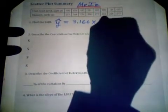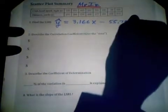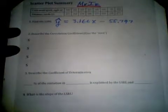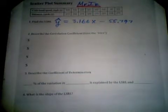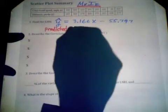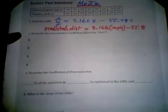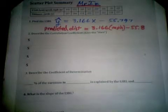The y-intercept which is at negative 55.797. That's pretty decent information. You can also improve your score and improve your communication by actually writing it out in words. We get the predicted distance is equal to 3.166 times the miles per hour of the golf club minus 55.8.